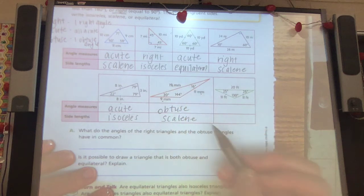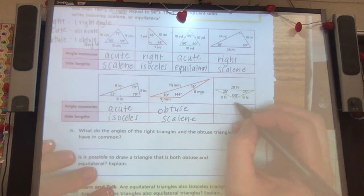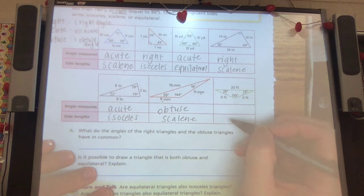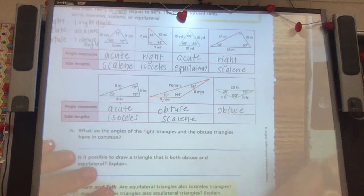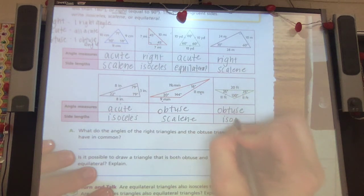And angle measures here. We have 25, 25, 130. So that is also obtuse. 11, 11, 20 means isosceles.